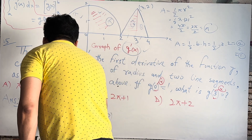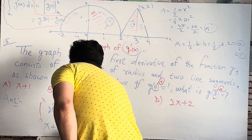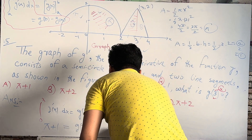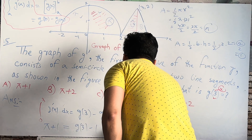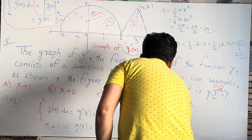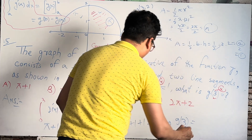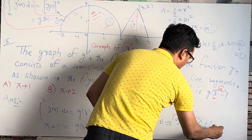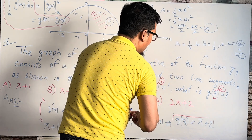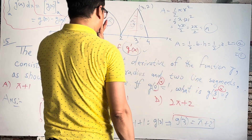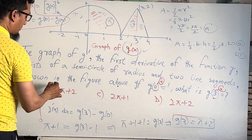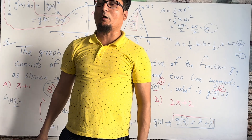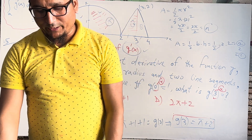So the integral from 0 to 3 of G prime(X) dx equals π + 1, and this equals G(3) minus G(0). Since G(0) = 1, we get π + 1 = G(3) minus 1. Moving the minus 1 to the left side: G(3) = π + 1 + 1 = π + 2. The answer is π + 2, which is answer choice B. I hope you all understand. If you have a problem, write it in the comments. Assalamualaikum, bye bye.